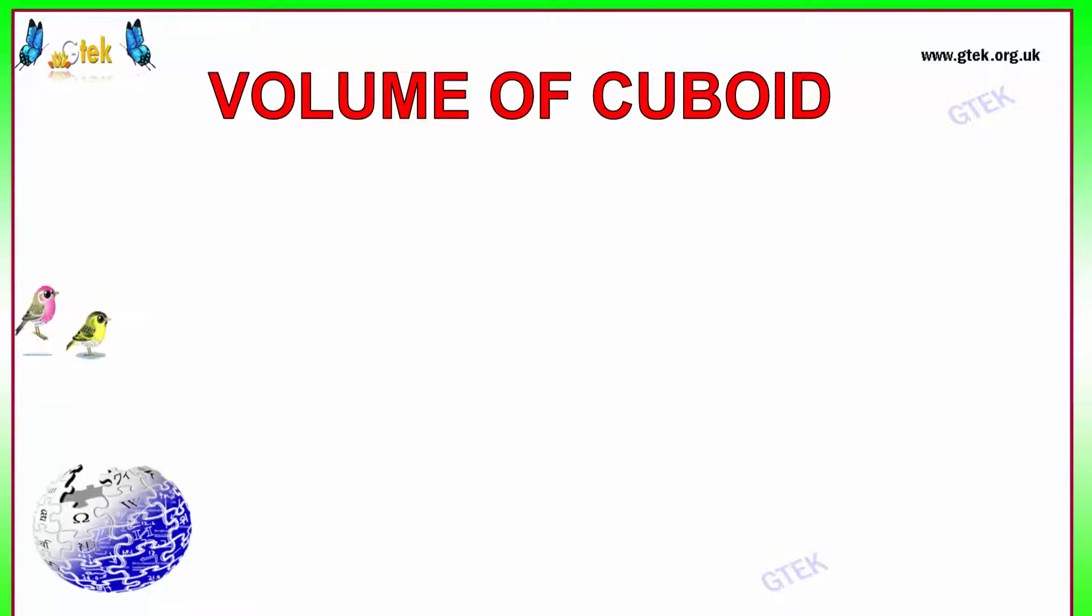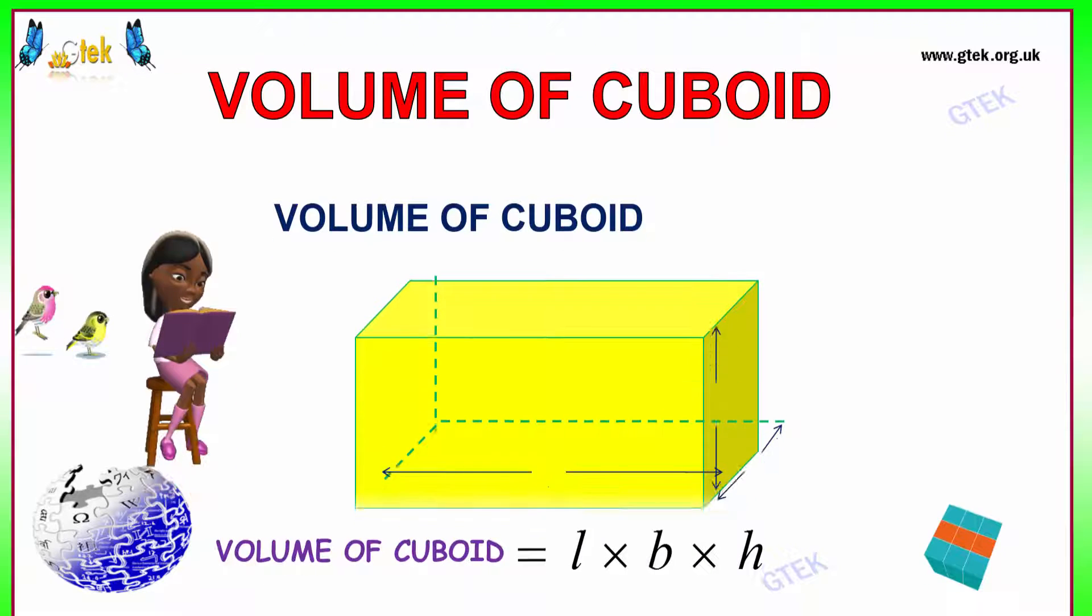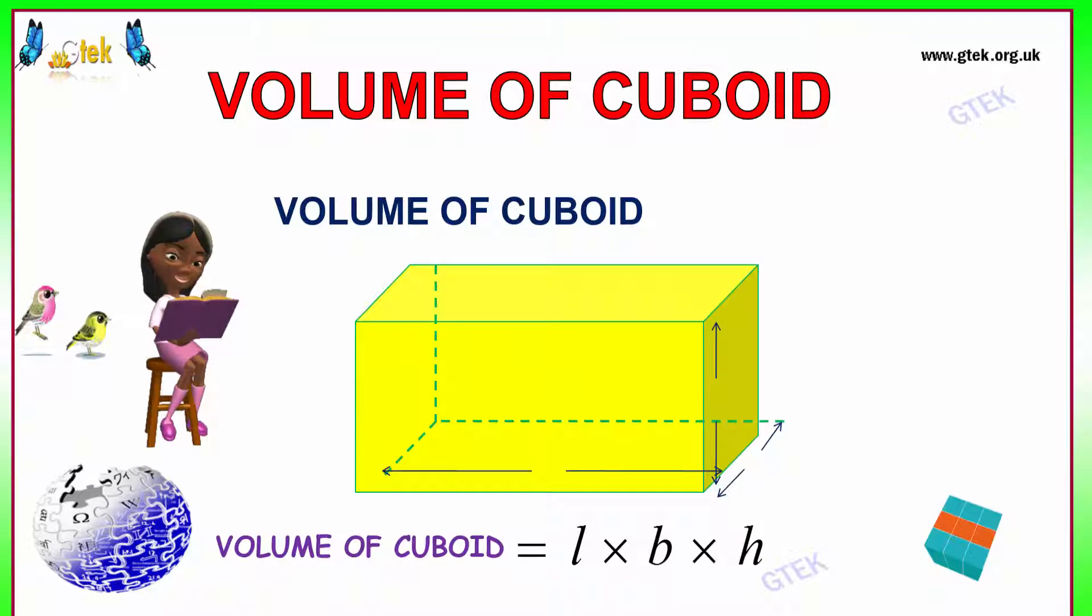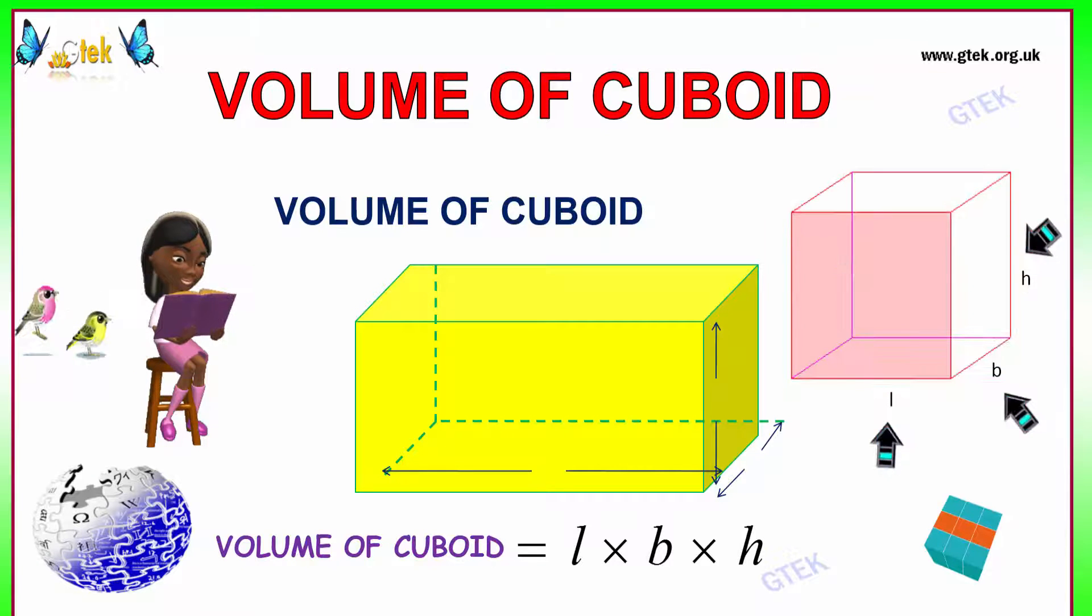We have seen the surface area of the cuboid. Now we will see the volume of the cuboid. The volume of the cuboid is the product of the length, breadth, and height. That's L into B into H. That's your volume of the cuboid. This is how your cuboid is, and the volume is the formula which is shown.